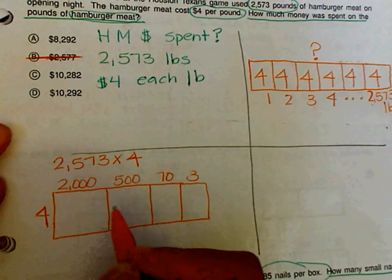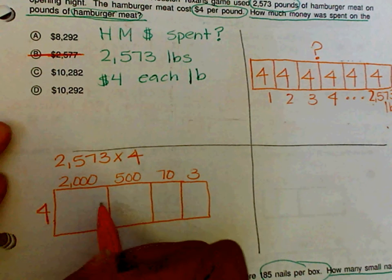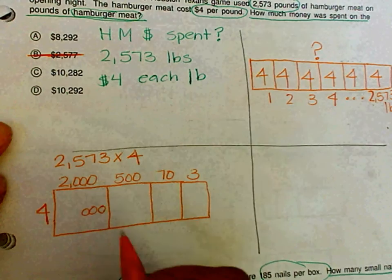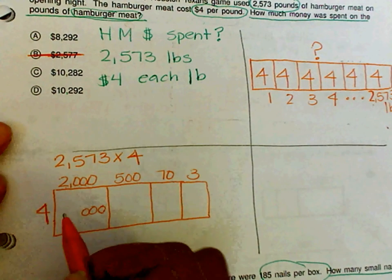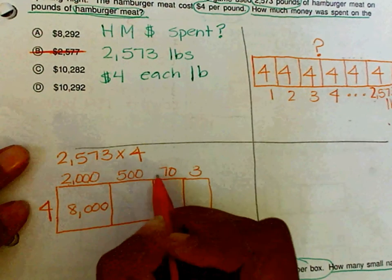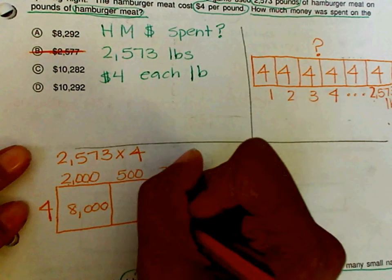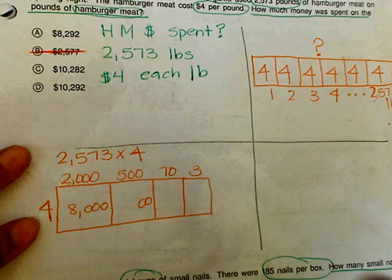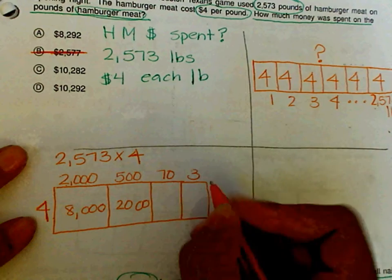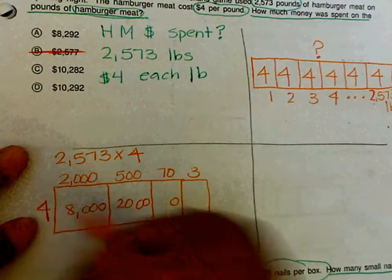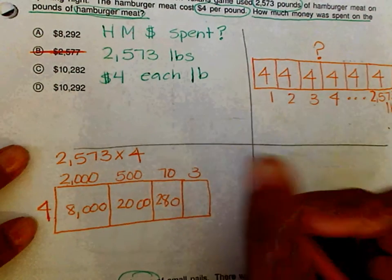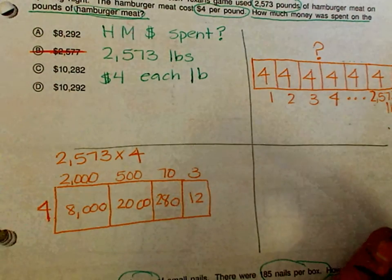Now we're going to count zeros to see how many zeros should go in this box: one, two, three. And now we're going to multiply 2 times 4. For 500 times 4, how many zeros are there? Two zeros. And then 5 times 4 is 20. 70 times 4 has how many zeros? One. 7 times 4 is 28. 3 times 4 is 12. What do we do with our partial products? We add them.